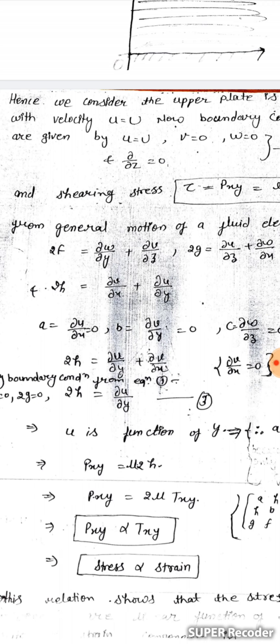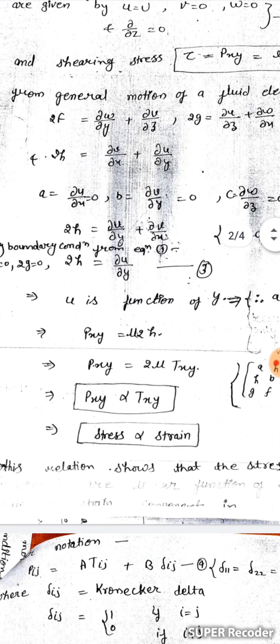And 2h = delta v/delta y + delta u/delta x. Now using all the boundary conditions, we get 2f, 2g, and 2h equal to delta u/delta y, which means u is a function of y only.